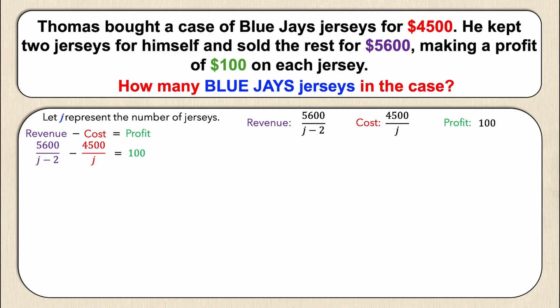Now I have some pesky fractions, so I need to get rid of them. I'm going to do so by multiplying everything by a common denominator. In this case the common denominator is j times (j minus two), because it will go into all of the denominators and I can cancel them out.